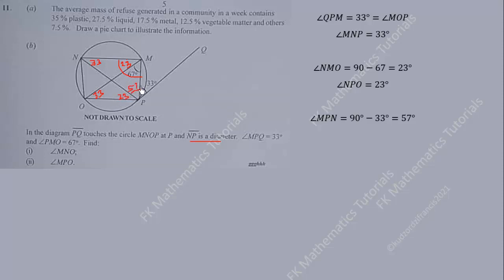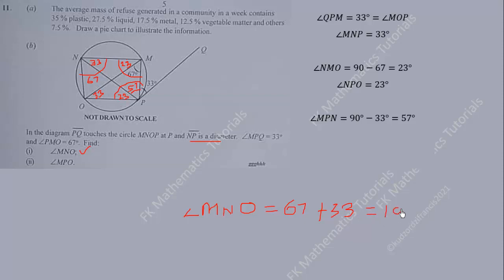Now that we have all the parts, we can calculate angle MNO. Adding 67 plus 33 gives us angle MNO equal to 100 degrees. Then angle MPO equals 23 plus 57, so angle MPO is equal to 80 degrees.